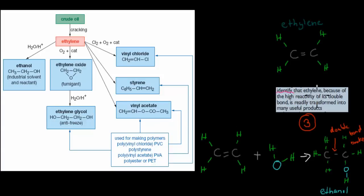And this one says, identify the ethylene because of its high reactivity of its double bond. It's really transformed into many useful products. So ethylene, all ethylene molecules have its double bond. And by breaking it, we can actually attach other things to it. And these are some of the things that we can create because of it.